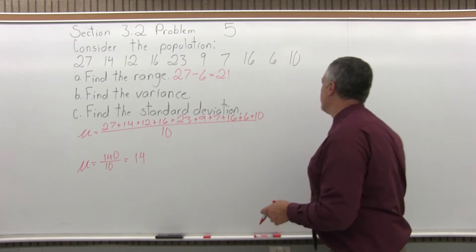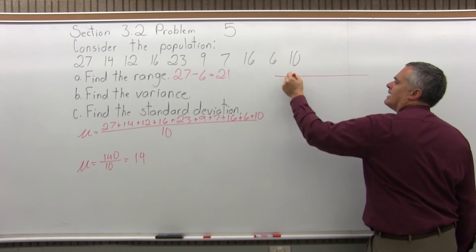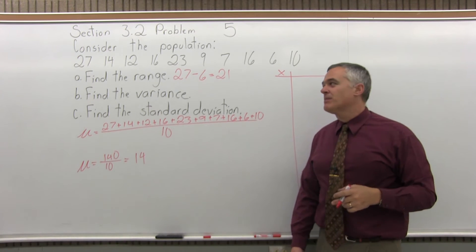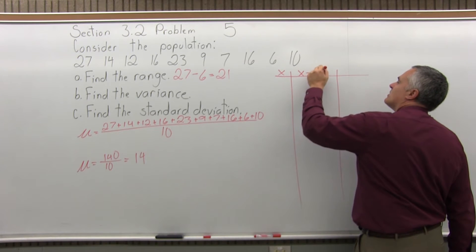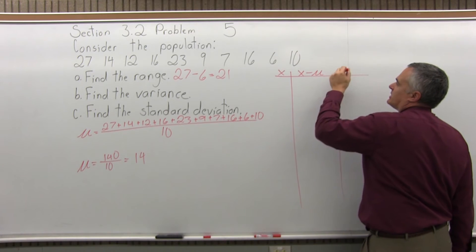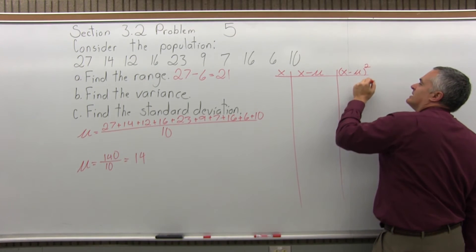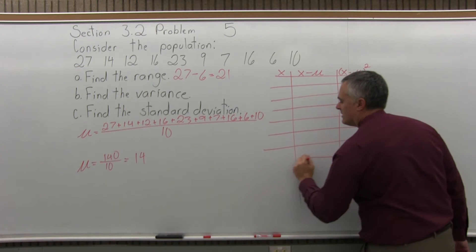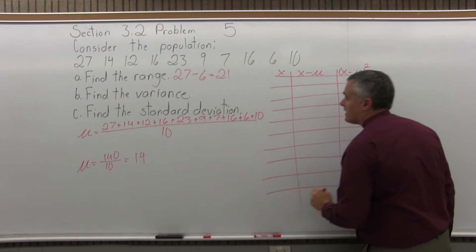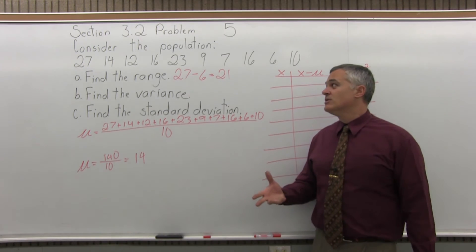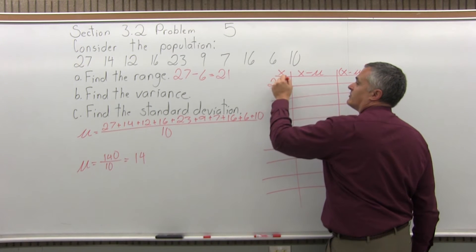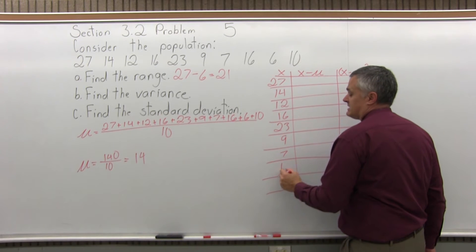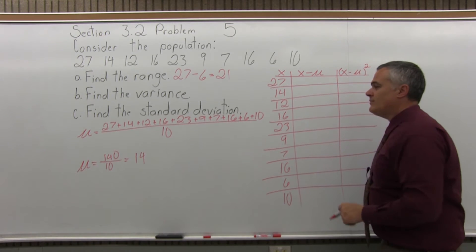So step 2 is fill out that chart. The chart has three columns. The first column is x. The middle column is typically x minus x-bar, but because it's a population, to really do a nice job, we'll label it x minus mu, because mu is the x-bar for a population. And the last column will be x minus mu in parentheses raised to the second power. Now the first column for x is just simply the data given to you in the question. We'll have 27, 14, 12, 16, 23, 9, 7, 16, 6, and 10. Those are the different values of x.